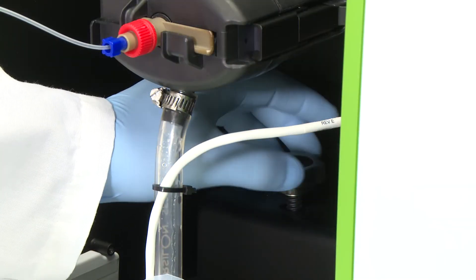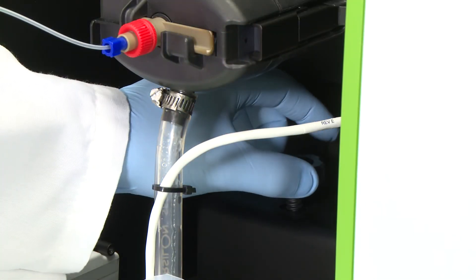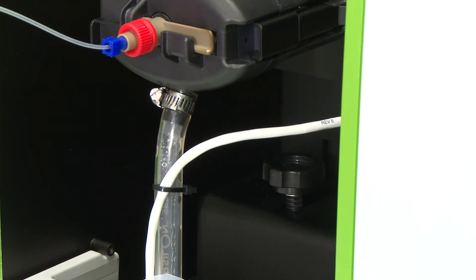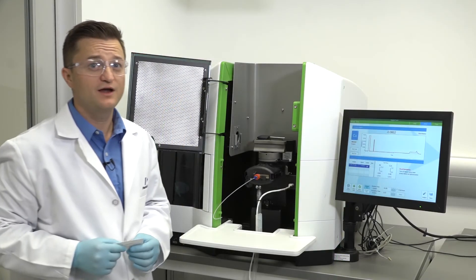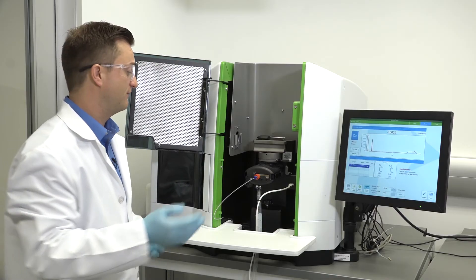Now, raise the burner with the vertical alignment control until the display indicates a slight positive absorbance reading of .002 to .004. Very slowly, lower the burner with the vertical alignment control clockwise until the absorbance reading returns to zero. Finally, rotate clockwise the vertical alignment control an additional half turn.